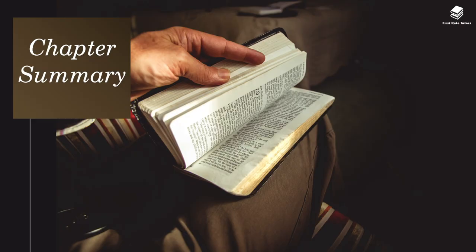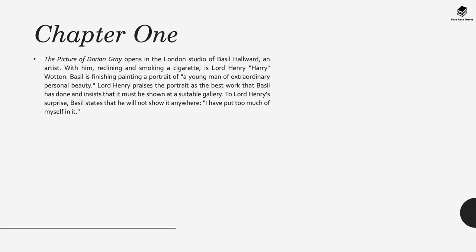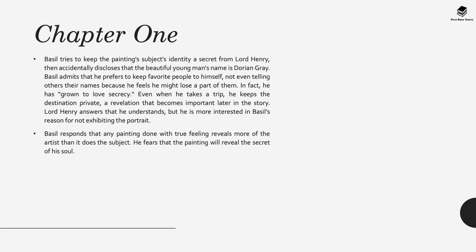Chapter one opens in the London studio of Basil Horwood, an artist. Reclining with him and smoking a cigarette is Lord Henry, whom he also refers to as Harry. Basil is finishing a portrait of a young man of extraordinary personal beauty and Henry praises it as Basil's best work. To Henry's surprise, Basil states he won't show it anywhere—the novel says 'I've put too much of myself into it,' and there are homoerotic undertones here. Basil accidentally discloses that the beautiful young man's name is Dorian Gray. Basil admits he keeps favourite people to himself, not even telling others their names for fear of losing part of them—he also keeps his travel destinations private, a detail that becomes important later.